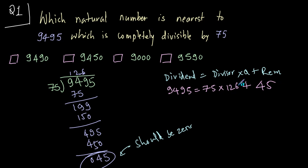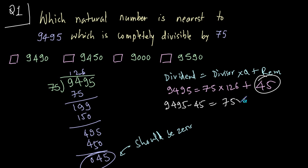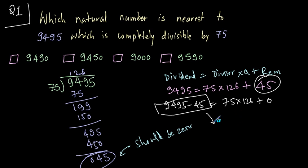As I mentioned, had this number been divisible by 75, the remainder should have been zero. To make this zero, let's subtract 45 from both sides: 9495 minus 45 equals 75 into 126 plus zero. This number will be divisible by 75 because the remainder is zero. So 9495 minus 45 gives you 9450, and the correct option is option B.